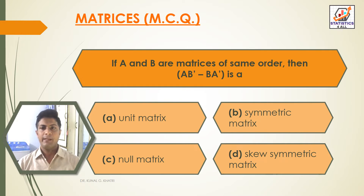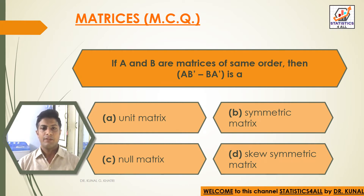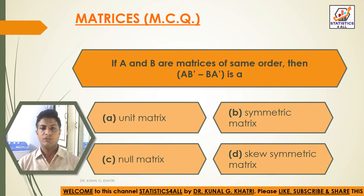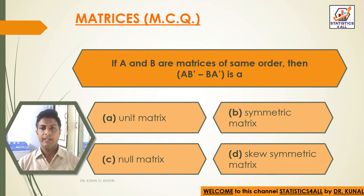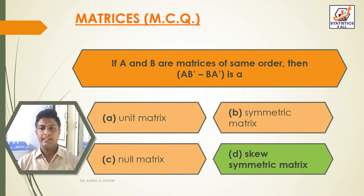Next question: if A and B are matrices of the same order, then AB' − BA' is a — option A: unit matrix; option B: symmetric matrix; option C: null matrix; option D: skew-symmetric matrix. The answer is option D, that is skew-symmetric matrix, if A and B are matrices of the same order, then AB' − BA'.